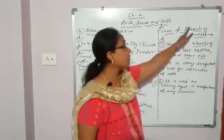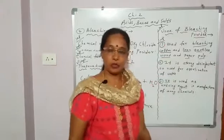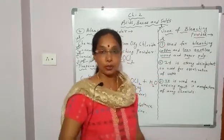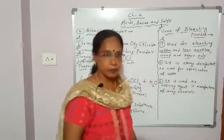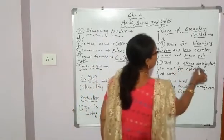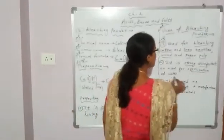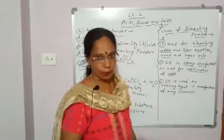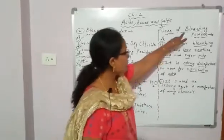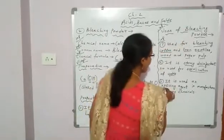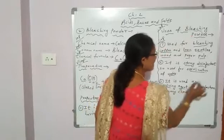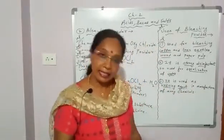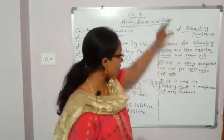Second use: bleaching powder is a strong disinfectant. So it is used for sterilization of water to kill bacteria in water. Third: bleaching powder is also used as an oxidizing agent for the manufacture of many chemicals.